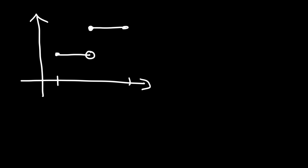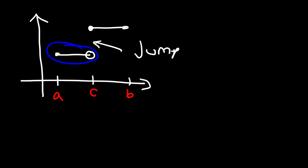Now what are some examples of functions that are not continuous? Let's call this A, B, and C. On the interval from A to C, notice that we have a jump discontinuity — there is no connection between the left part of the graph and the right part of the graph. Therefore this is a discontinuous function. There are also some other types of discontinuities you need to be familiar with.